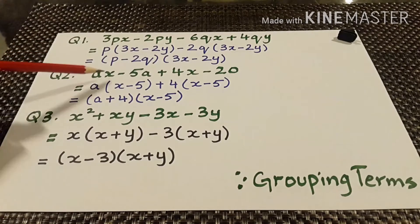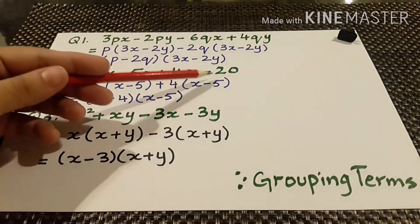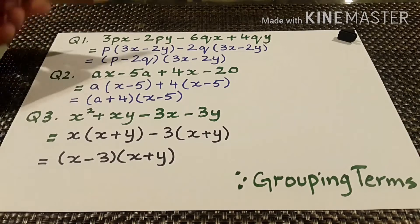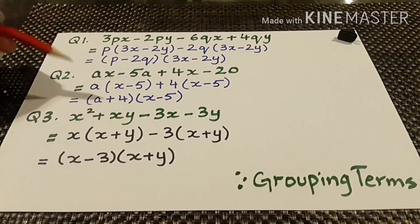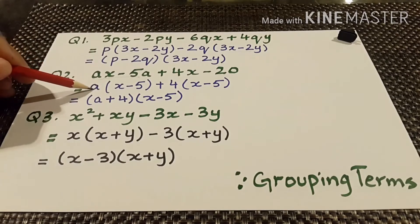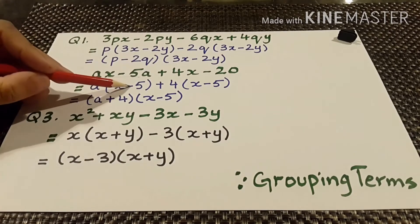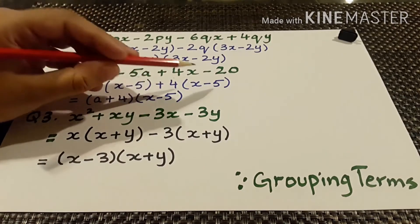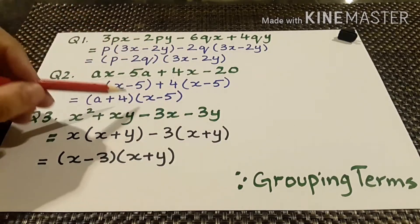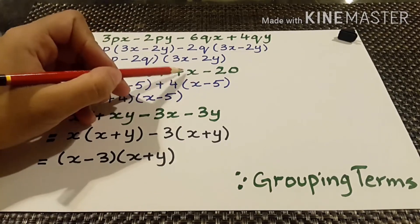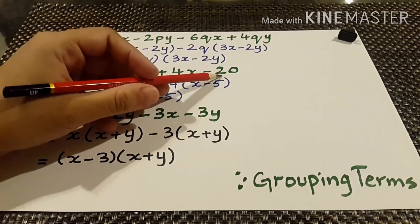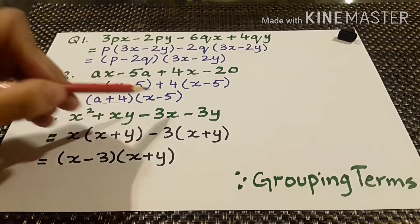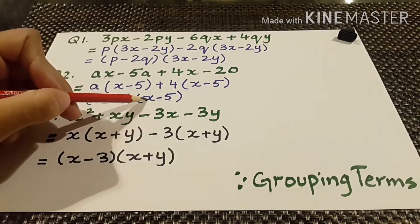Question number 2: ax minus 5a plus 4x minus 20. Again we have 2 groups — ax minus 5a is one group and 4x minus 20 is the other. From the first group we take a as common so inside we get x minus 5. From the second group we take plus 4 as common and x minus 5 inside, because 4 times x is 4x and 4 times 5 is 20. So a plus 4 is one factor and x minus 5 is the other common factor.